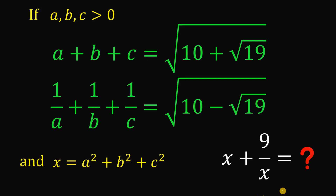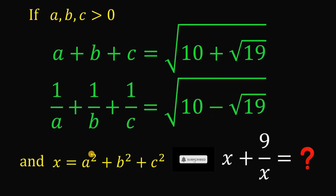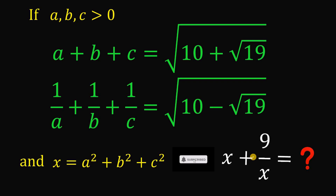Today, we will answer this algebra challenge. Here's the question: if A, B, C are all greater than 0, and given these two equations — A plus B plus C equals square root of (10 plus square root of 19), and 1 over A plus 1 over B plus 1 over C equals square root of (10 minus square root of 19) — and X equals A squared plus B squared plus C squared, then the goal is to find the numerical value of X plus 9 over X.